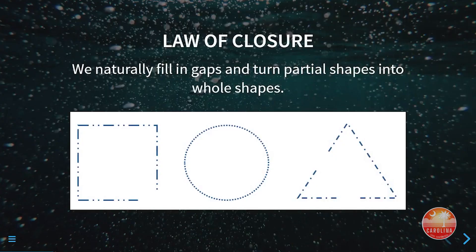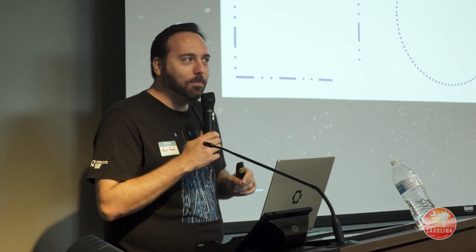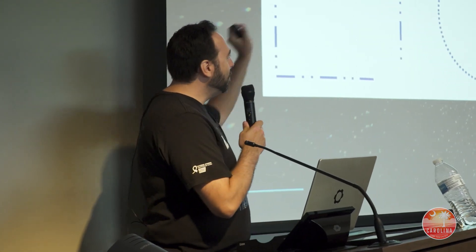One of them is the law of closure. The idea of the law of closure is that our minds will naturally fill in the gaps. So for example, I can show you shapes up here and people will say, oh, of course there's a square, a circle, and a triangle. But none of those shapes actually exist because squares, circles, and triangles are complete — none of these are complete, thanks to the power of PowerPoint and the ability to change the line type.